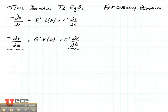Here on the left you can see the two time domain transmission line equations that we just derived. There's one for voltage and one for current. Each equation has a derivative with respect to z and a derivative with respect to t.